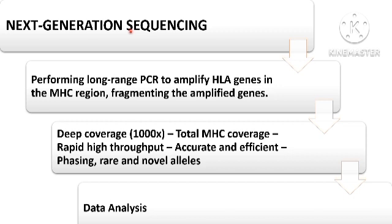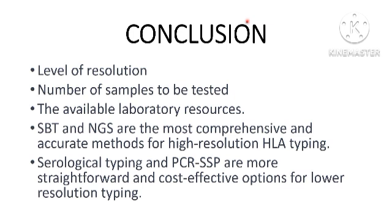Next generation sequencing is a high throughput sequencing method that allows for the simultaneous analysis of multiple HLA genes and their alleles. It provides high resolution and comprehensive HLA typing, capable of identifying rare and novel alleles. NGS is valuable in research settings and when detailed HLA information is required for transplantation and disease association studies. The only limitation is the data analysis part. To conclude, the choice of HLA typing method depends on the required level of resolution, the number of samples to be tested, and available laboratory resources. Sanger sequencing and NGS are the most comprehensive and accurate methods for high resolution typing, while serological typing and PCR-SSP are more straightforward and cost-effective options for low resolution typing.